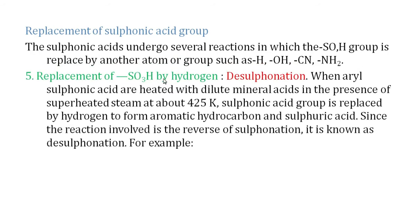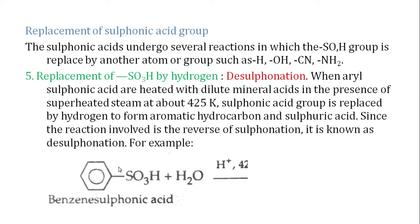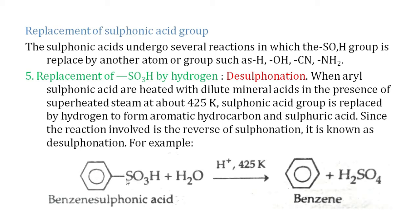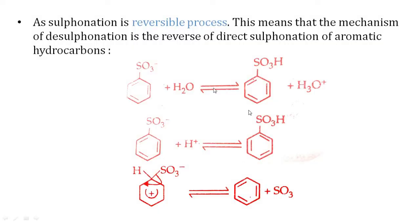The first replacement reaction is replacement of SO3H by hydrogen — this is called the desulfonation reaction. Aryl sulfonic acid or benzene sulfonic acid is heated with dilute mineral acid in the presence of water, or with superheated steam at 425 Kelvin. The sulfonyl group leaves and combines with hydrogen to form H2SO4, while benzene is regenerated. This is the reverse process of sulfonation.